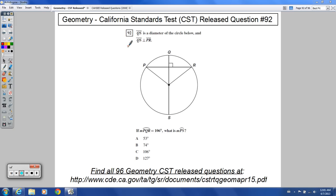Welcome to geometry release question number 92 for the CST release questions. Segment QS is a diameter of the circle below, so it goes through the center point all the way through. Segment QS is perpendicular to segment QR.